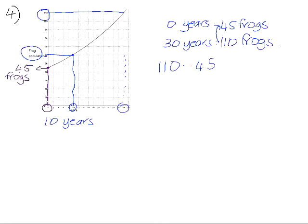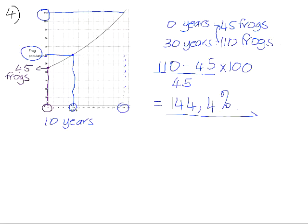You're wanting to find out how much it grew by. So you're wanting to find that as a percentage of the starting population. So we divide by 45 and then multiply by 100. And that percentage, if you take 110 minus 45, divide that by 45 and multiply by 100 to get a percentage, it gives you 144.4%. So that is the percentage by which the population has grown over the 30-year period.